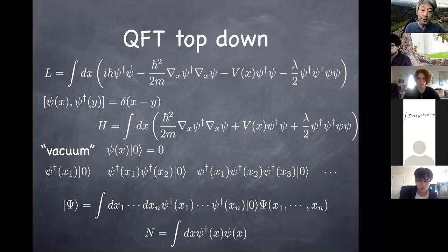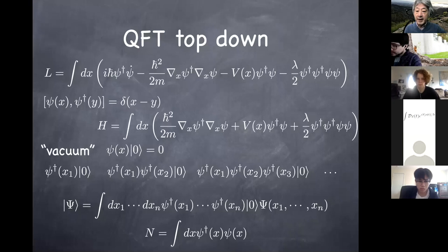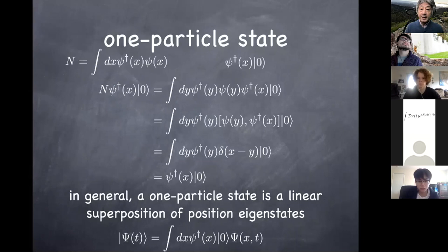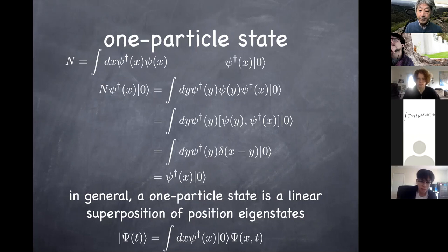The vacuum state is annihilated by the annihilation operator at every position x in space. We can then build the Fock space by acting creation operators on the vacuum: one-particle, two-particle, three-particle states, and so on. An arbitrary N-body state can always be written this way — you create N particles using creation operators on the vacuum, then take a linear superposition of these position eigenstates to define an arbitrary state capital Ψ. The number operator is given by the sum (actually integral over space) of the number operator at every position.